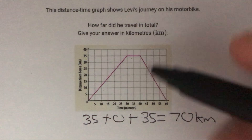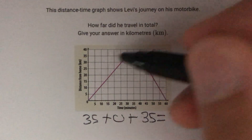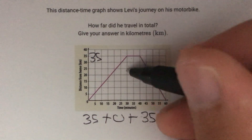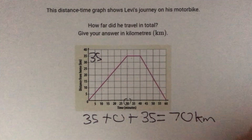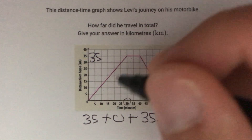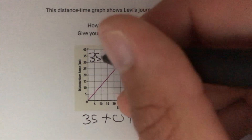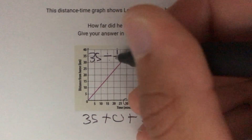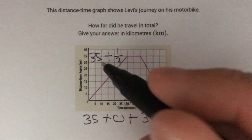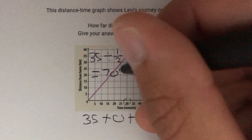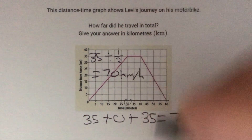If we look at the speeds, in the first segment he's traveled 35 kilometers and it's taken him 30 minutes, or half an hour. To find the speed — distance divided by time — we do 35 divided by a half, which gives us 70 kilometers per hour.